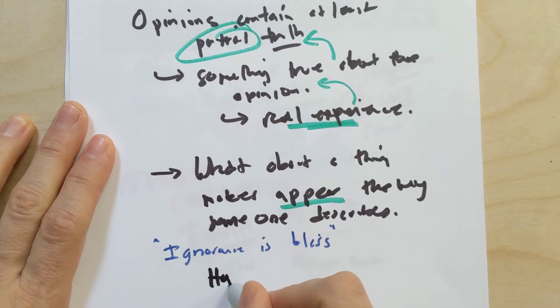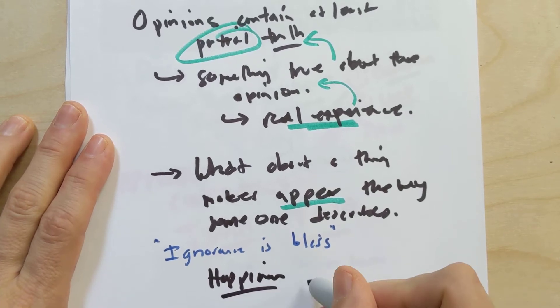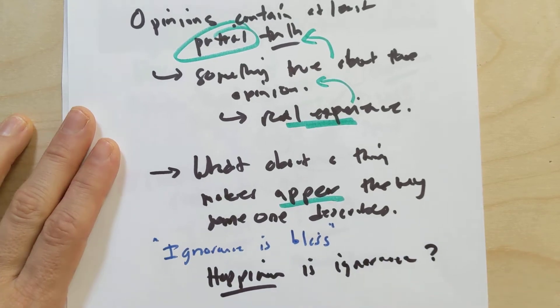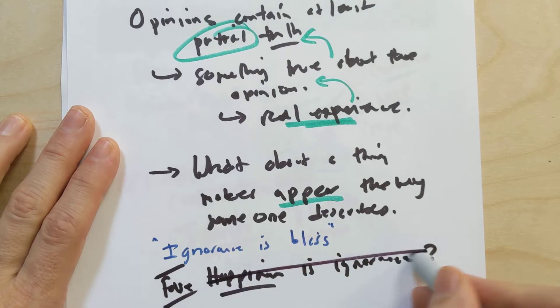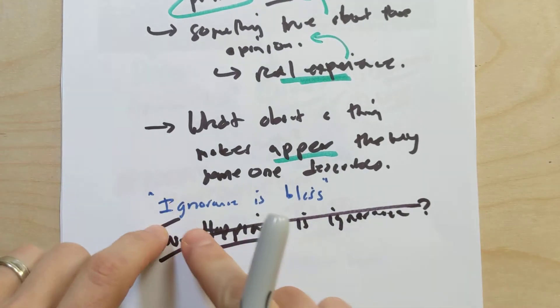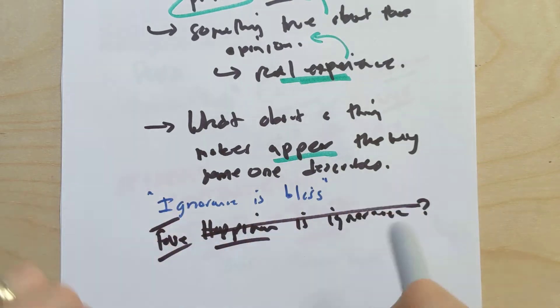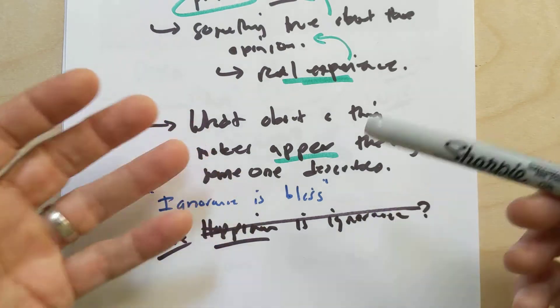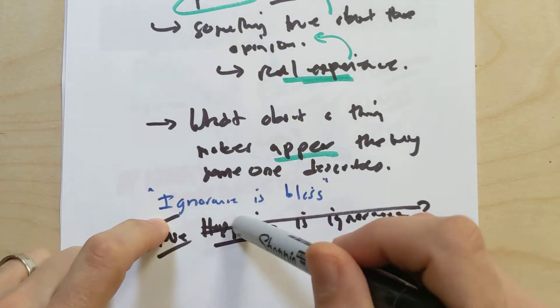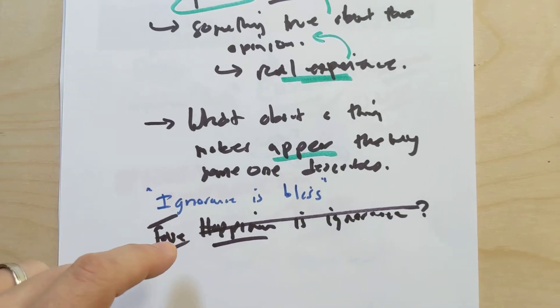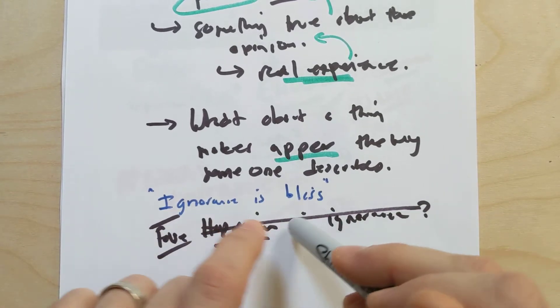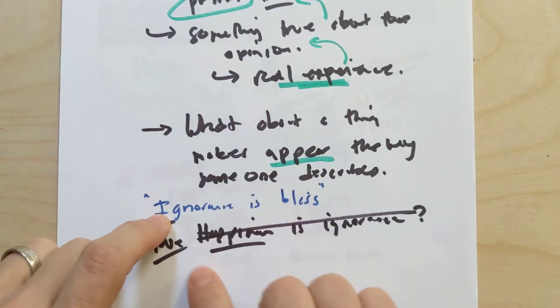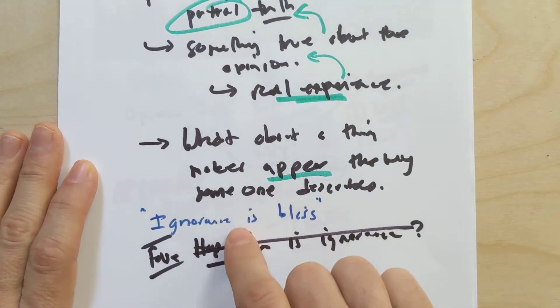The real question is, is happiness ignorance? Is that the case that the only way to be happy is to be ignorant? I would say that's false. That can't possibly be the case that happiness is truly ignorance, but yet there's something true about this. Sometimes the kinds of things that we would know about the state of the world or the state of our relationships might actually cause us to be less happy in those times. In that sense, it would be better that we didn't even know, at least from our personal perspective, at least in the moment.